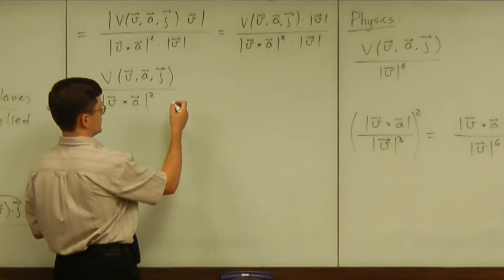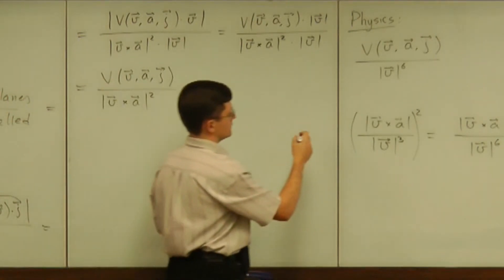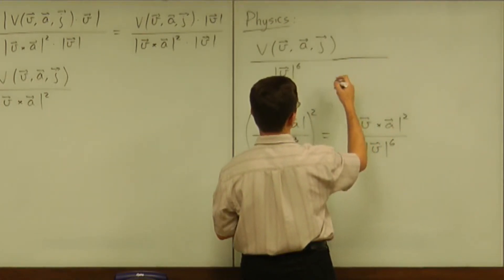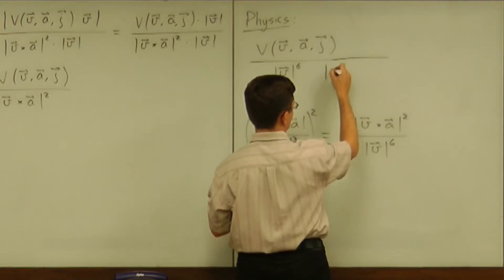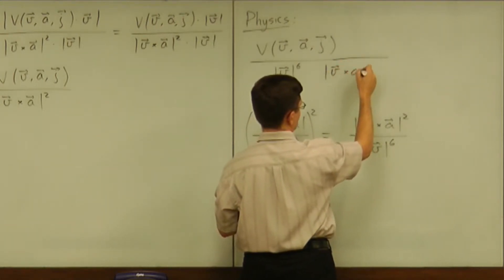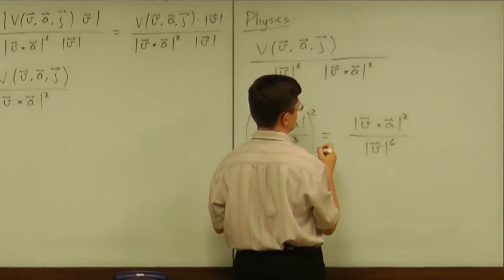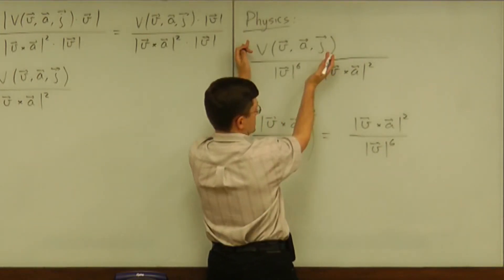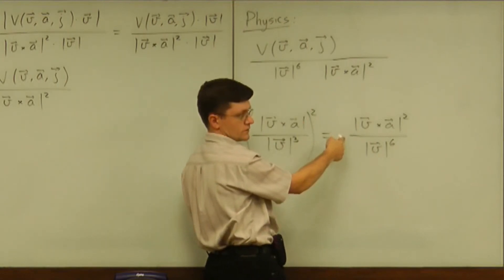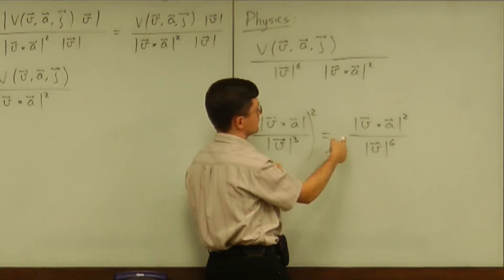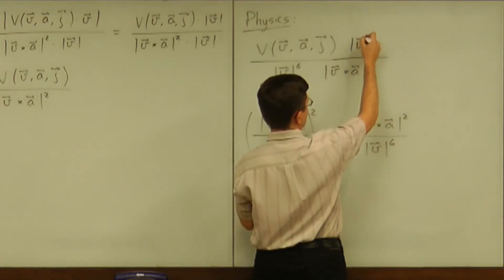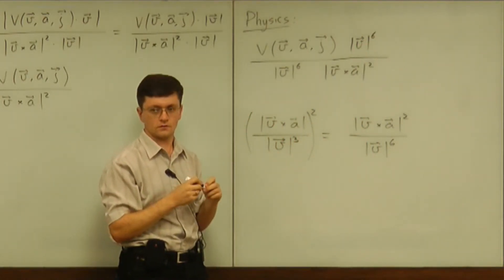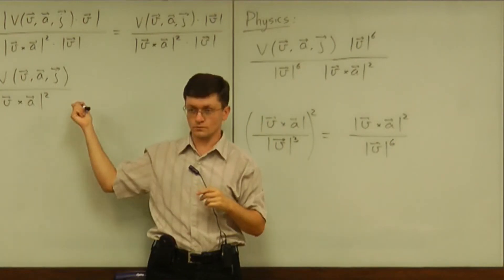What it means is that if you divide this by the quantity we had, if you divide it by the square of the curvature, you will get speed to the power of six cancelled and you will get exactly what we have here.